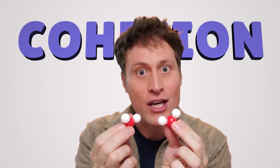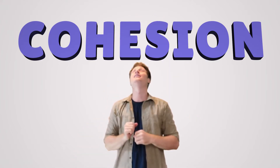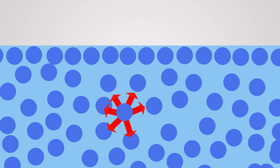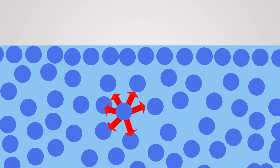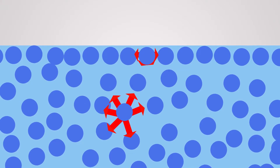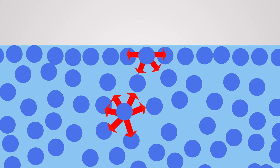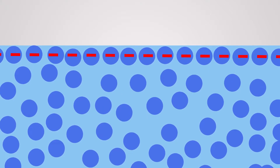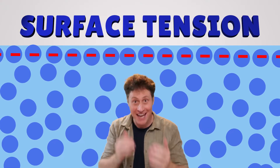All the molecules are attracted to each other — this is called cohesion. The molecules in the middle are being attracted to all the other molecules in all directions. But on the outside, at the surface, they are only being pulled on one side, which means the surface molecules are pulled in tighter. They have more tension on the surface.